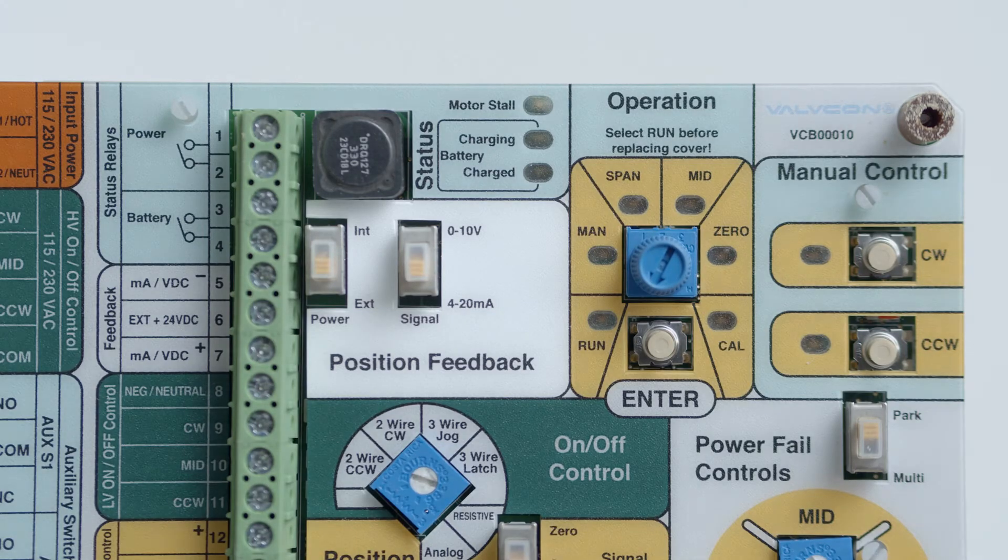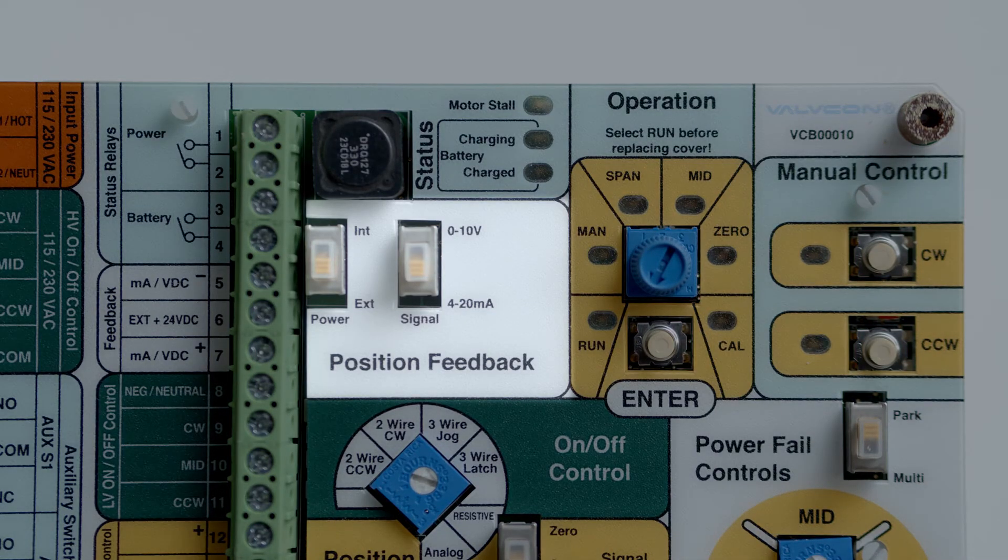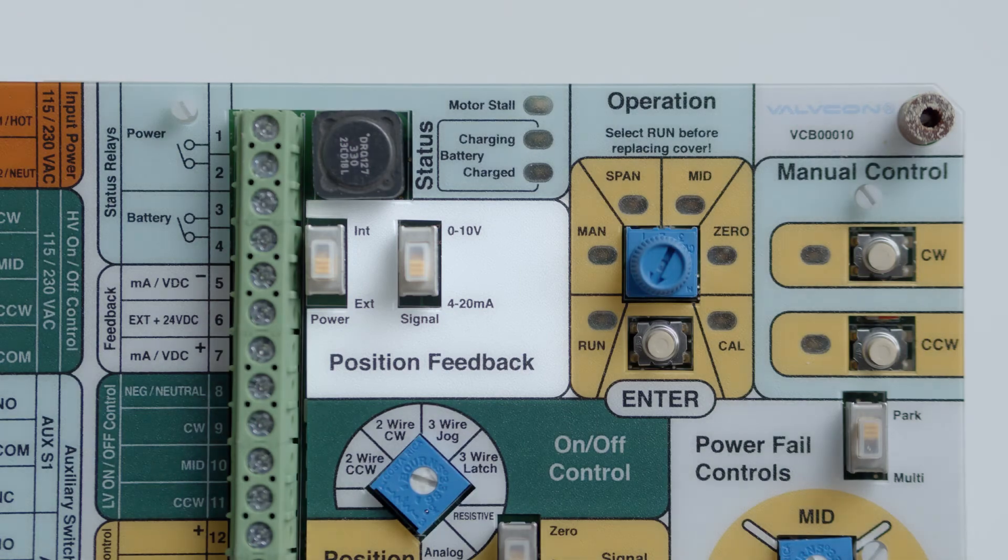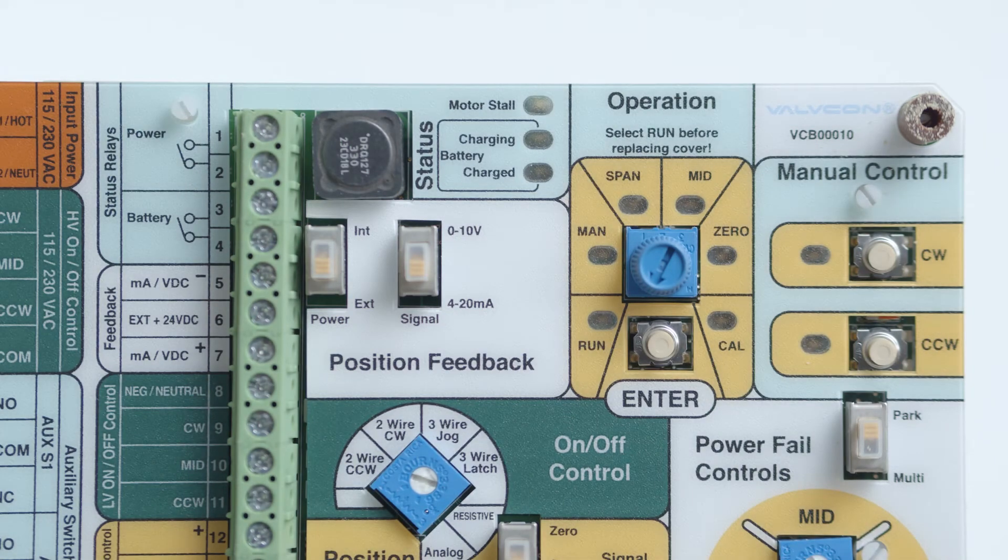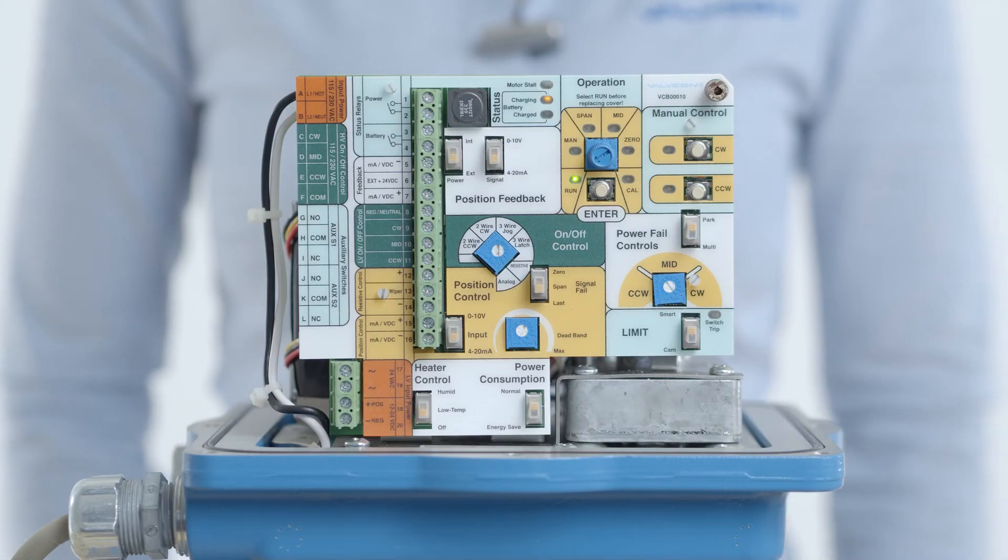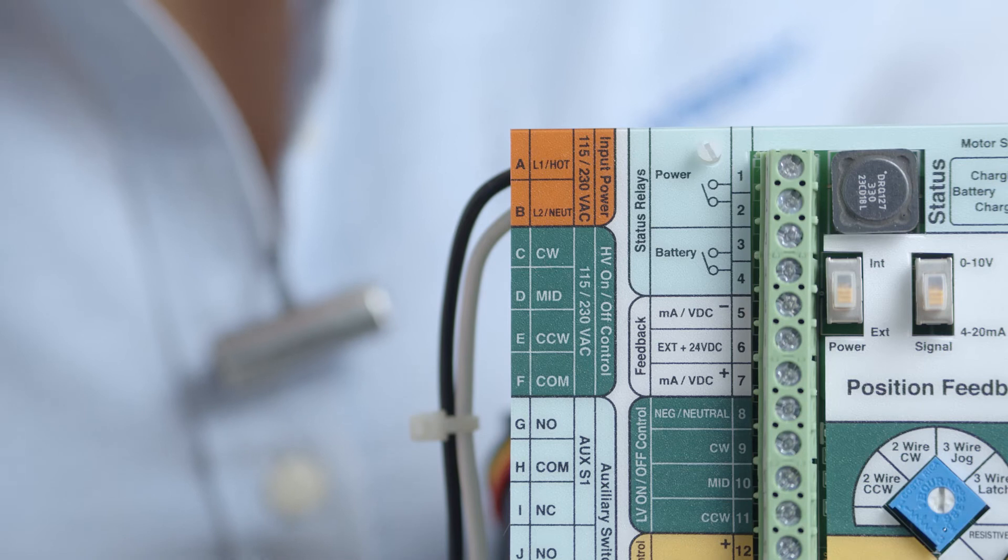The unit is also equipped with 4 to 20 milliamps or 0 to 10 volts DC position feedback as a standard feature. The feedback signal can be generated internally or it can be loop powered as desired. The feedback signal is wired to terminals 5, 6 and 7.